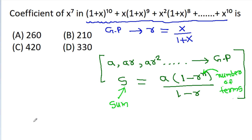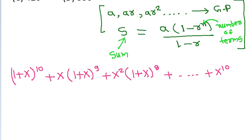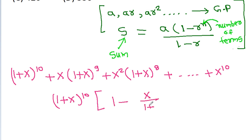So for this sequence (1 + x)^10 + x(1 + x)^9 + x^2(1 + x)^8, here a is (1 + x)^10, the common ratio r is x/(1 + x)^10, and the number of terms will be 11.